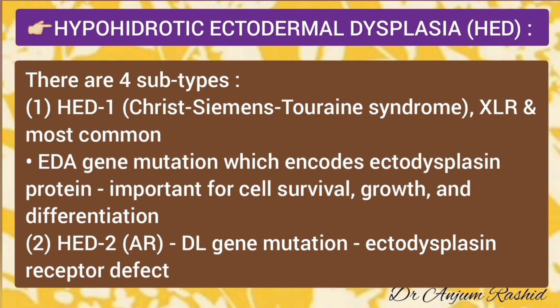The first important ectodermal dysplasia is hypohydrotic ectodermal dysplasia, which has four subtypes. Type 1 is also known as Christ-Siemens-Touraine syndrome. It is an X-linked recessive disorder and is the most common ectodermal dysplasia. It is caused by EDA gene mutation, which encodes ectodysplacin protein, which has an important role in cell survival, growth, and differentiation.